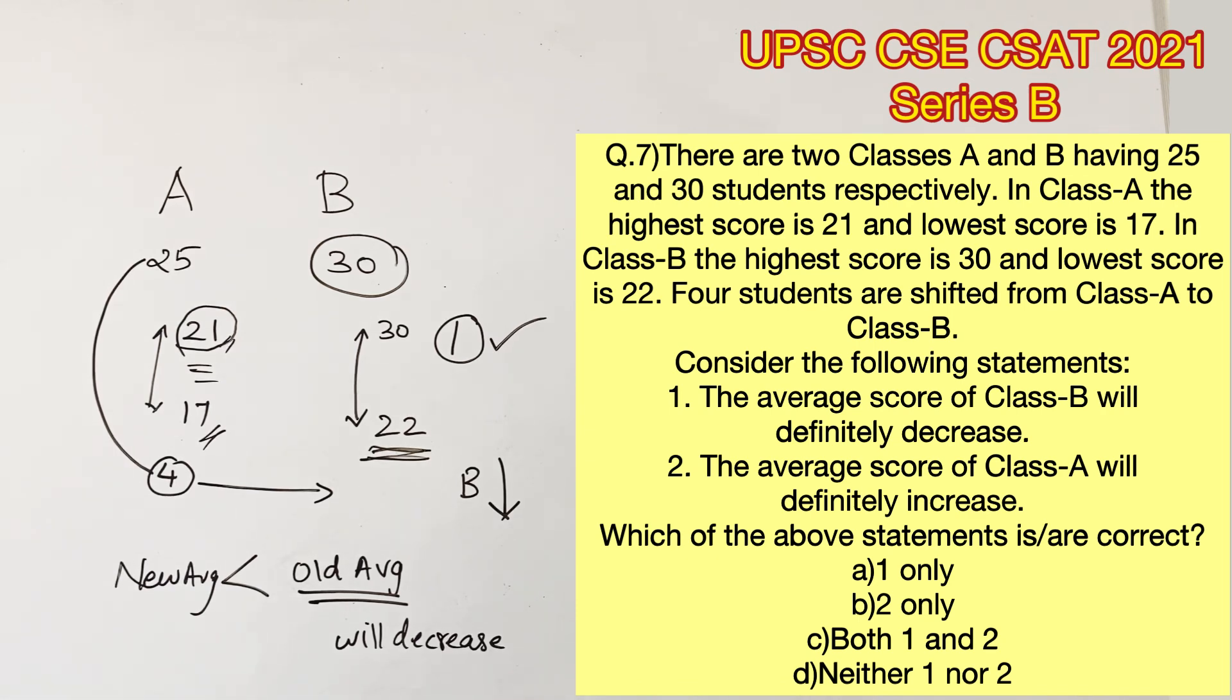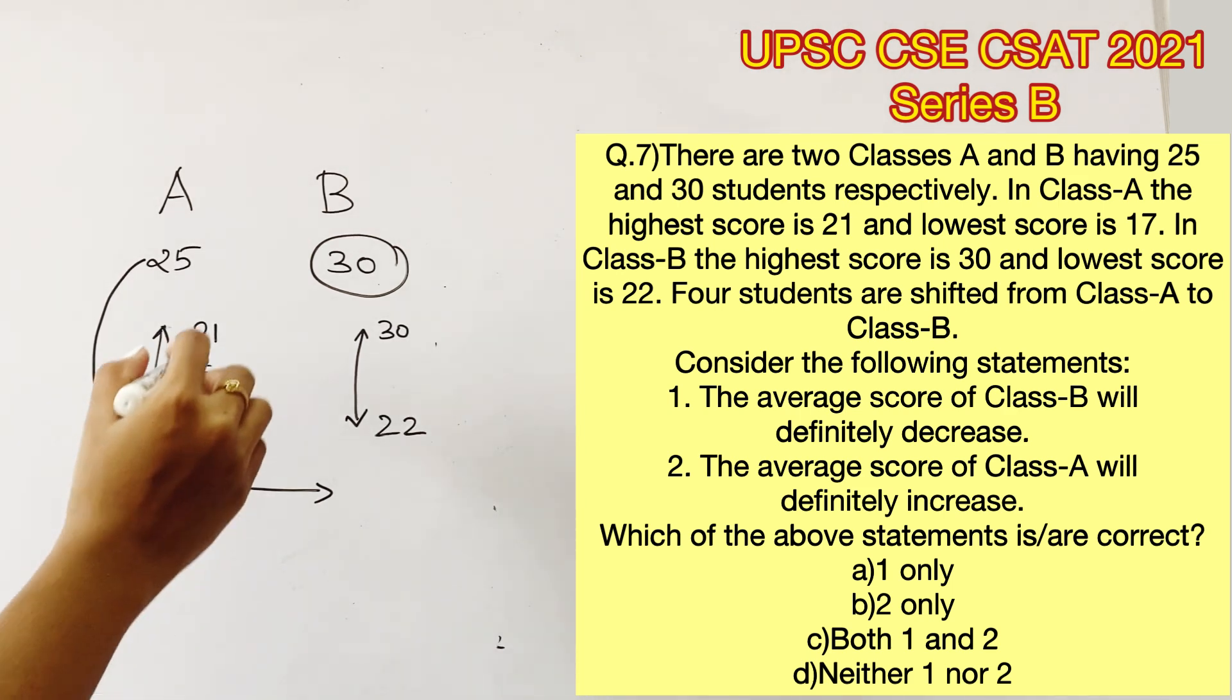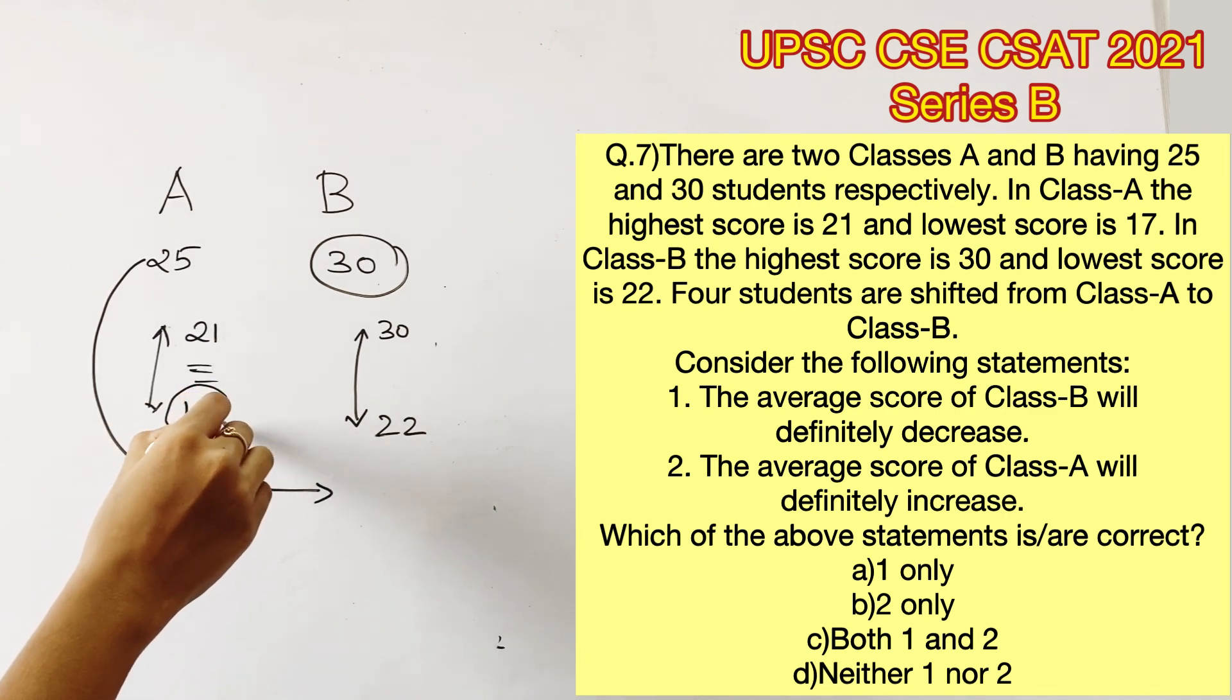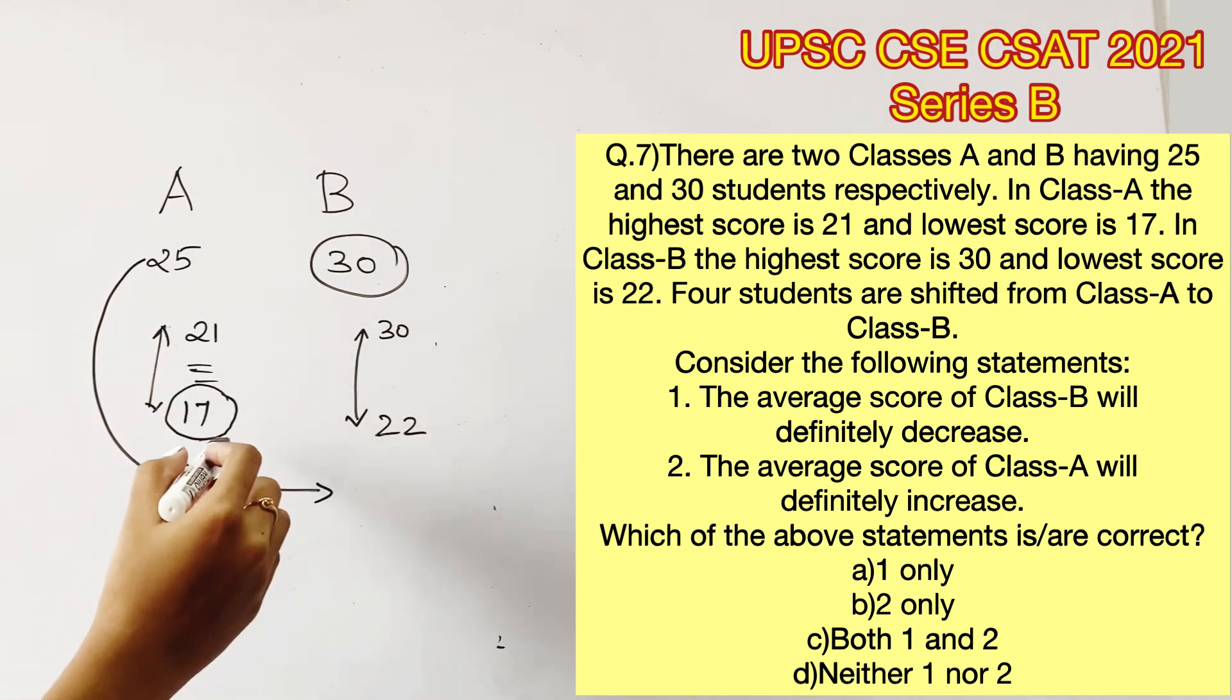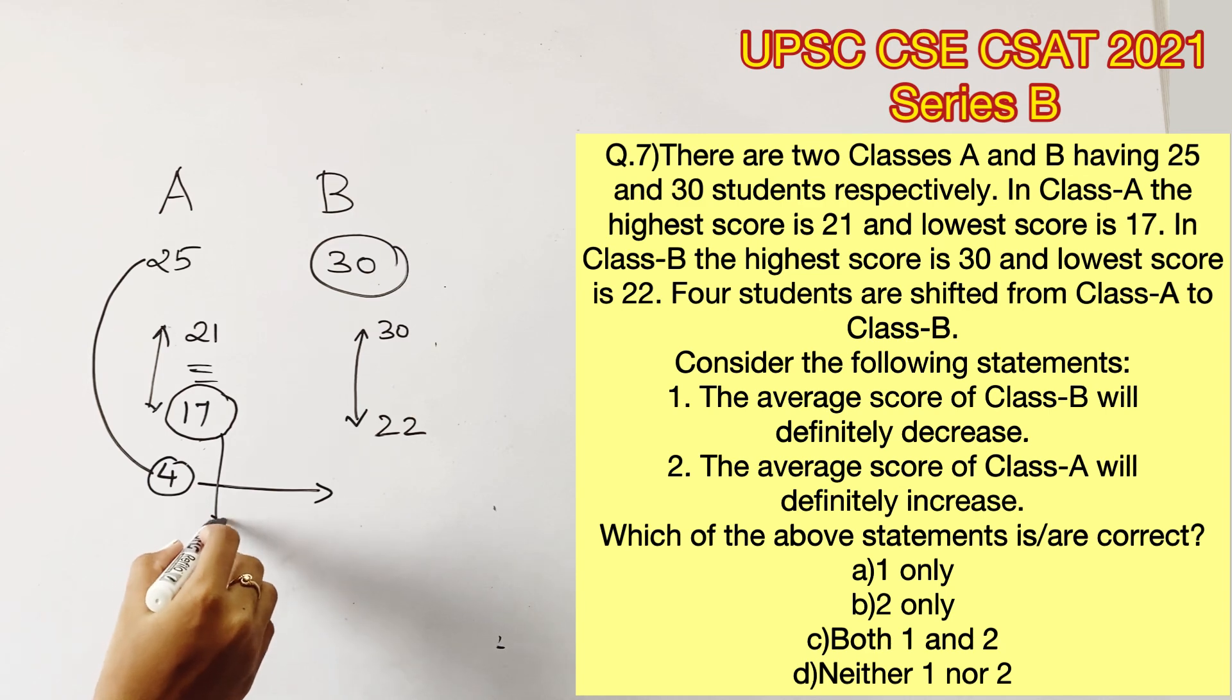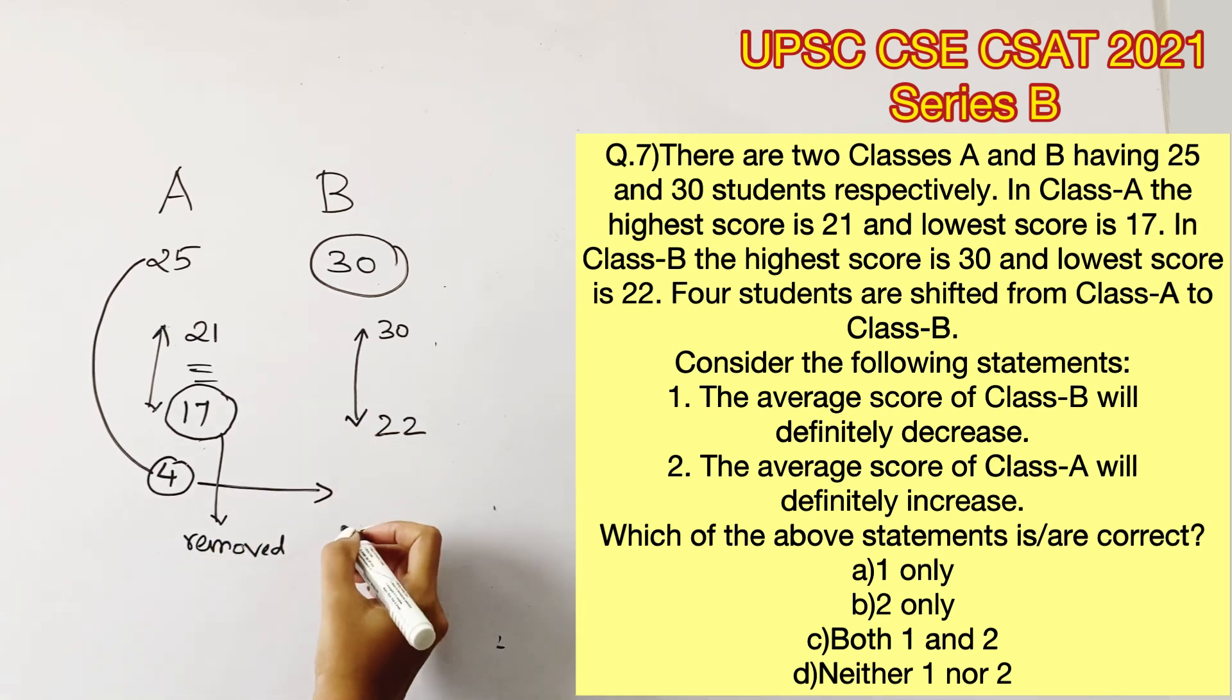The next statement says the average score of A will definitely increase. Now let's consider that all four people chosen have secured the lowest marks that is 17. In averages, there is another property that when you remove the lower marks, your average tends to increase because you will be left with higher values which will also increase your average.